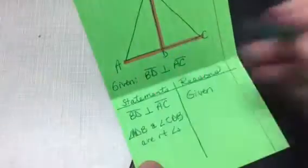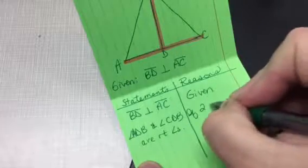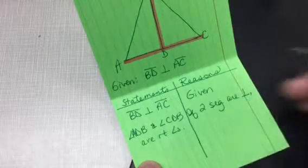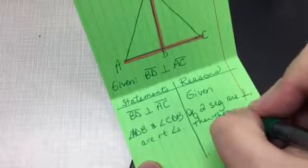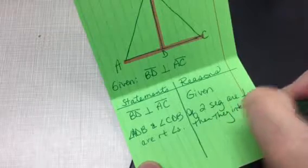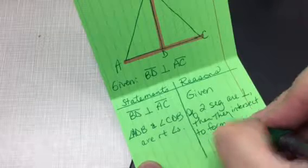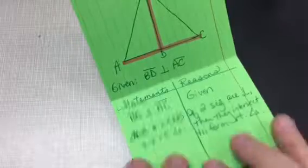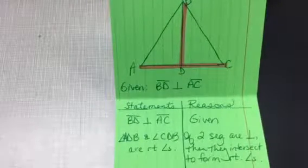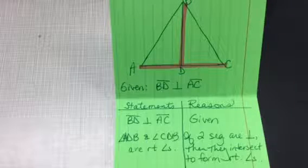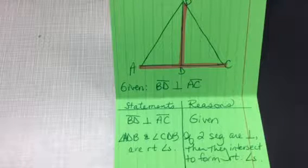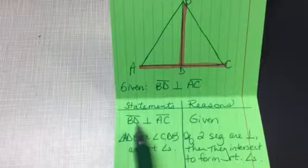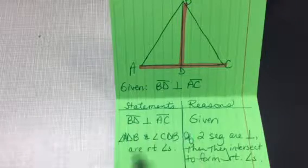And my reason, based on the definition of perpendicular lines, if two segments are perpendicular, remember, that's my symbol for perpendicular, then they intersect to form right angles. So again, instead of telling you that you have right angles in the picture, in my proofs that we'll eventually get to this week, I would maybe instead tell you that you have segments that are perpendicular, so you can make the conclusion that you have right angles.